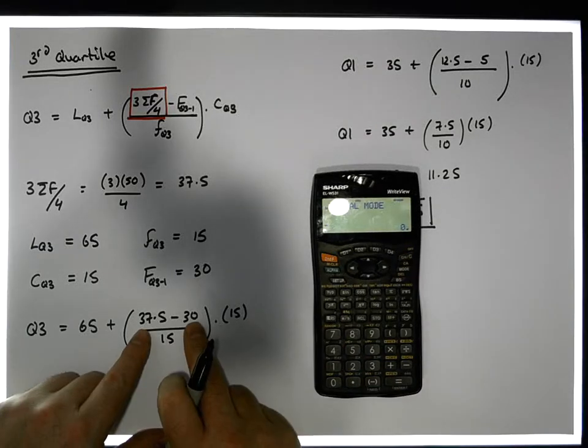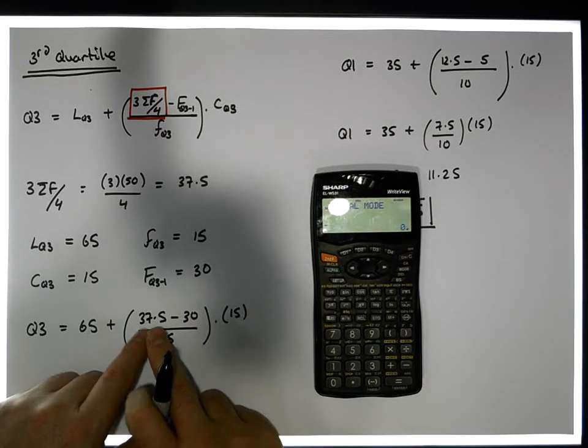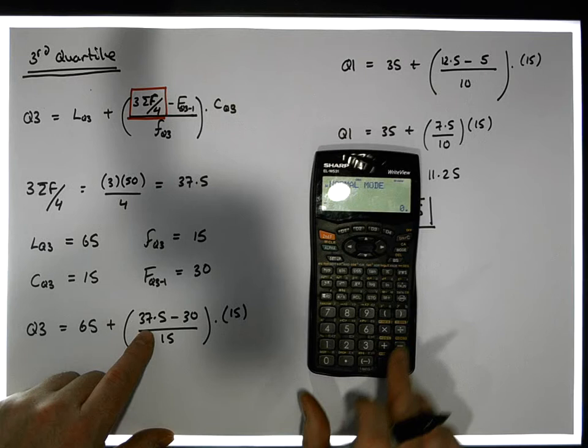I have 37.5 minus 30. Well, that gives us 7.5. So that gives us 7.5.